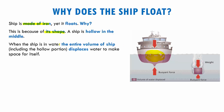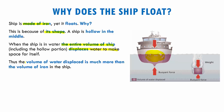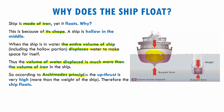When the ship is in water, the entire volume of the ship — including the hollow portion — displaces water to make space for itself. The volume of displaced water is much more than the volume of iron in it. It's just a thin sheet of iron with air in the hollow center, but the total volume is huge — bigger than the volume of the metal itself. According to Archimedes' principle, the upthrust or buoyant force is very high, much more than the weight of the ship, and that is why ships float on water.